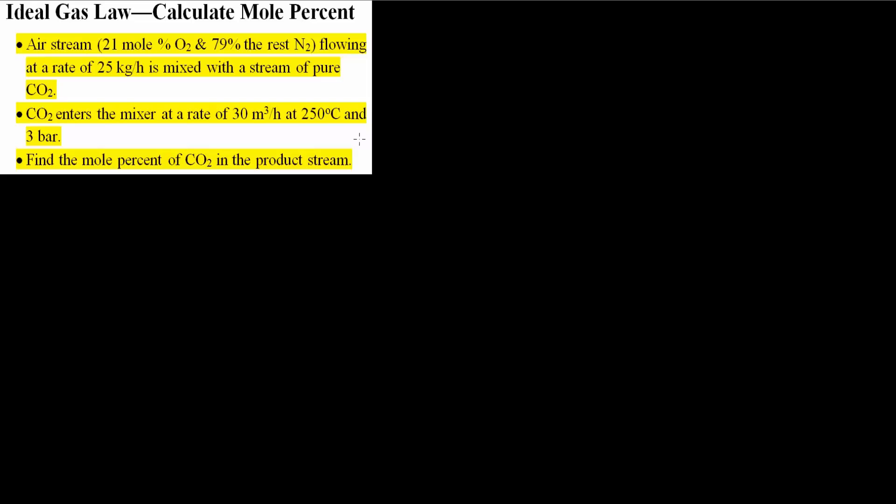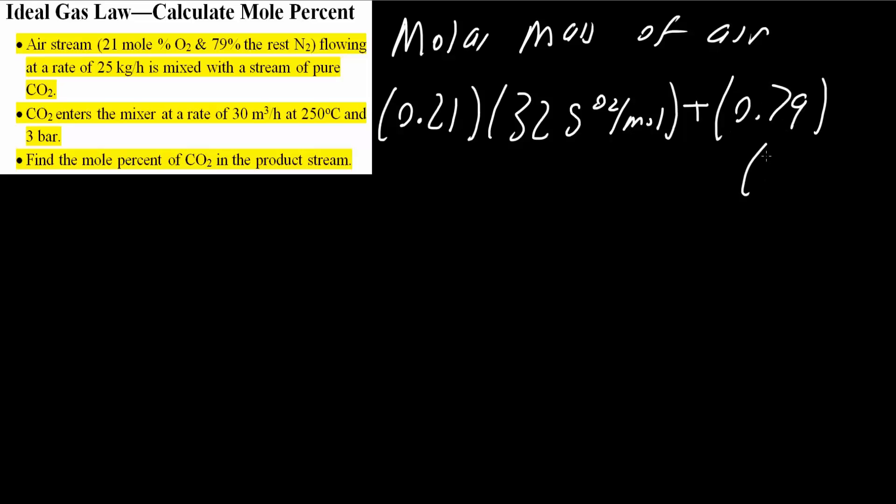The first thing we need to know is the molar mass of air. Because this is a mixture of 21 mole percent oxygen and 79 percent nitrogen, we have 0.21 times the molecular weight for oxygen, which is 32 grams of oxygen per mole, plus 0.79 nitrogen times the molecular weight for nitrogen, which is 28.02 grams of nitrogen per mole. This gives us 28.86 grams per mole, the molecular weight.